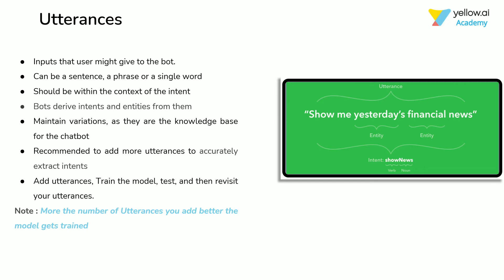The word 'show' signifies the intent of the user. However, the words 'yesterday' and 'financial' express the user's intent in a more specific manner. These words can be configured as entities to train the bot in understanding user intents in a more refined manner and converse accordingly.